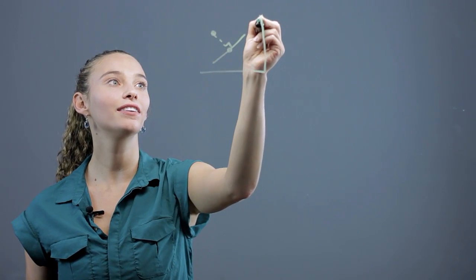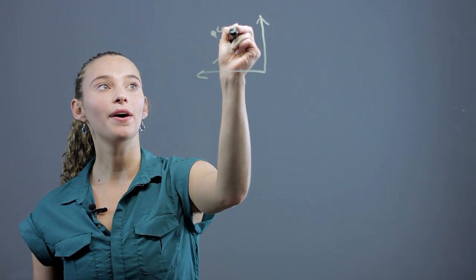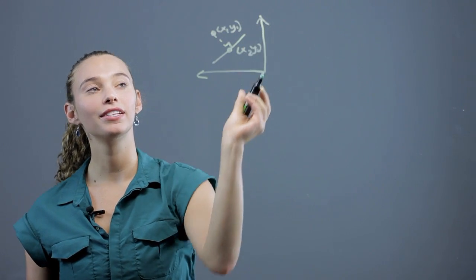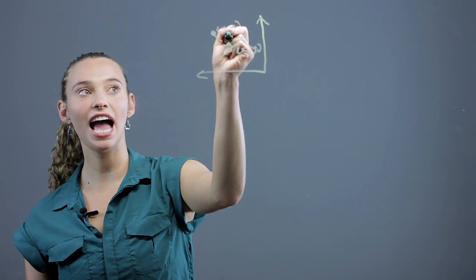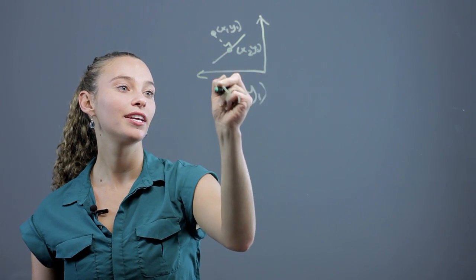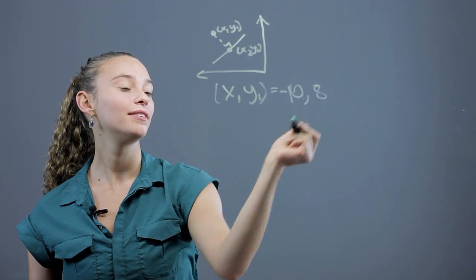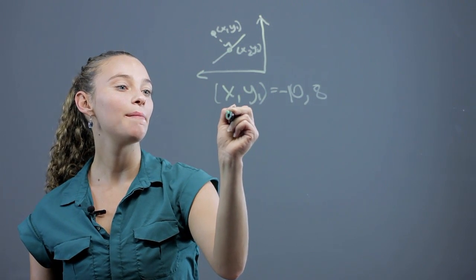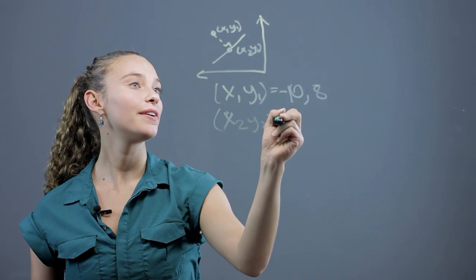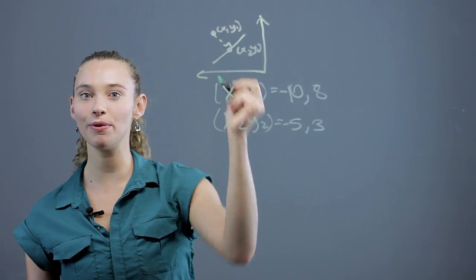Let's say we're on a graph here and this will be our x1, y1 point and this will be our x2, y2 point. So let's say x1, y1 is going to be negative 10 and 8, and x2, y2 is going to be negative 5, 3 for our two points.